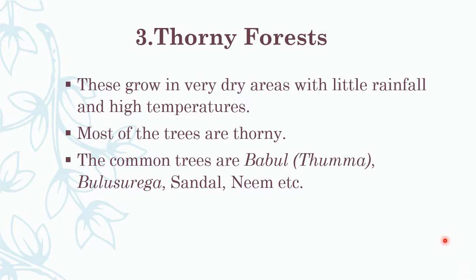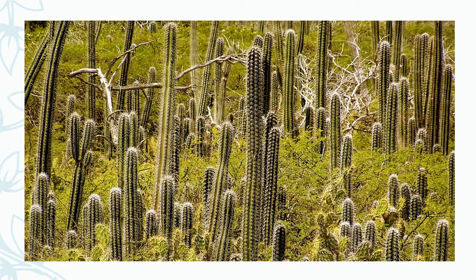Mostly in desert areas we can find such types of trees. However, not only desert areas — even areas where we don't get sufficient rainfall, in those areas also we can find such type of forest. All these trees are like cactus only — thorns are there. Such type of forest we can find in dry areas. That is thorny forests.